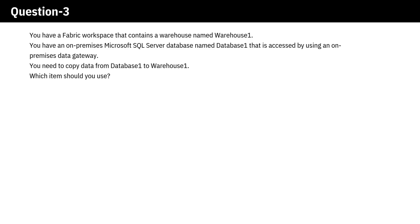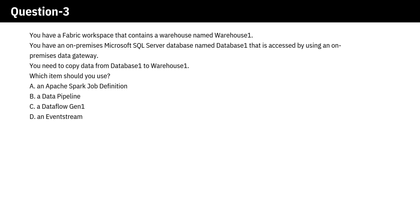Question. You have a Fabric workspace that contains a warehouse named Warehouse 1. You have an on-premises Microsoft SQL Server database named Database 1 that is accessed by using an on-premises data gateway. You need to copy data from Database 1 to Warehouse 1. Which item should you use? A. An Apache Spark job definition. B. A data pipeline. C. A Data flow Gen 1. D. An event stream.